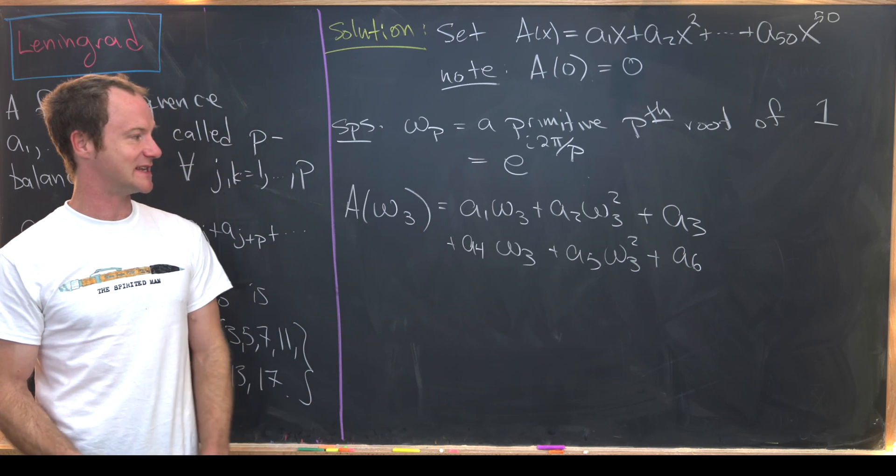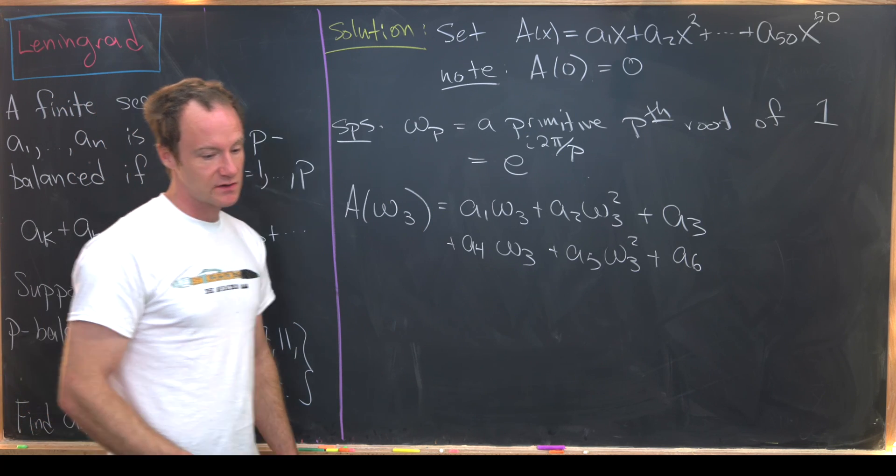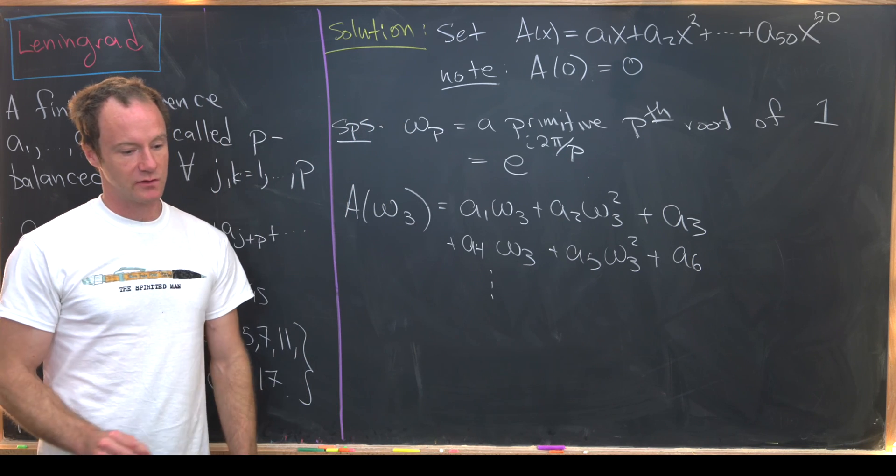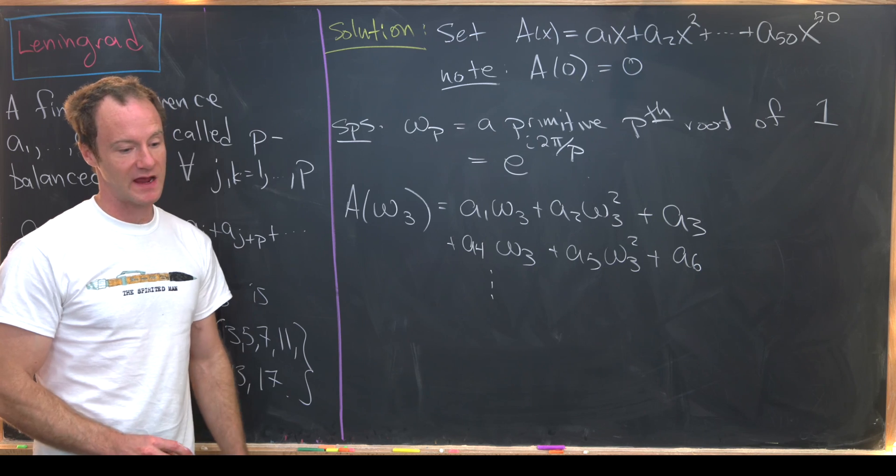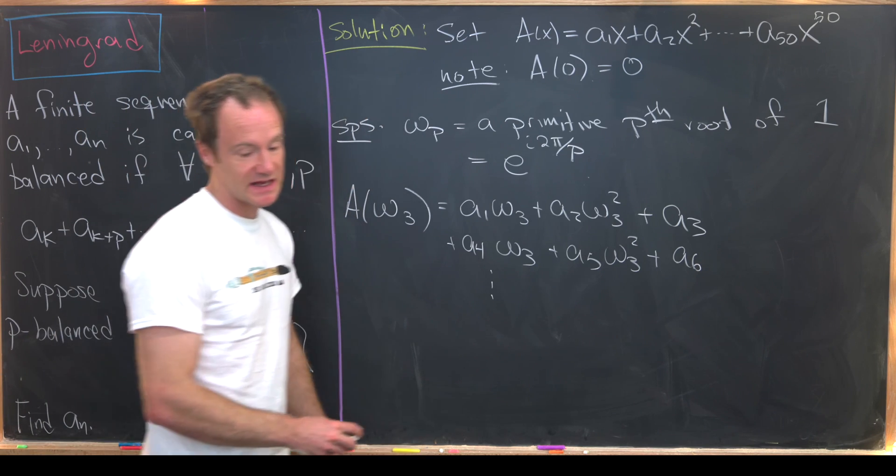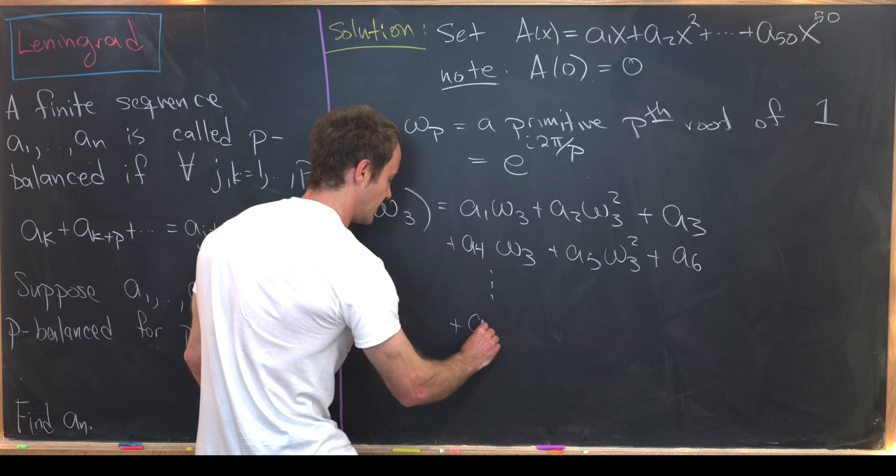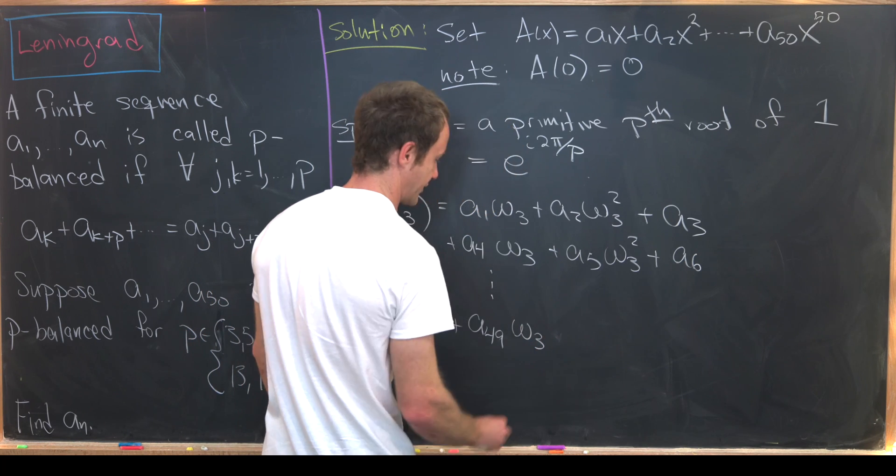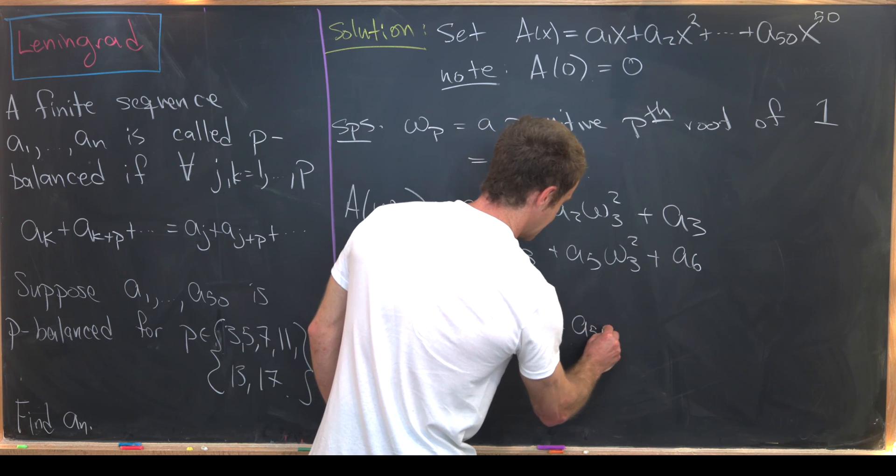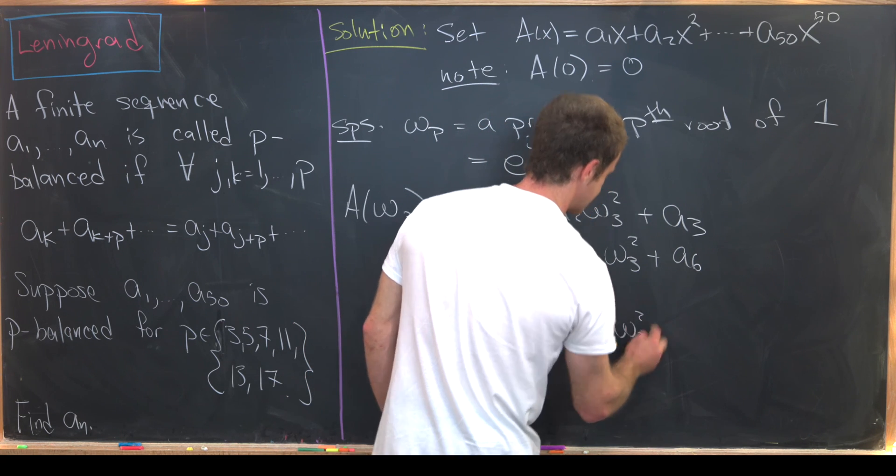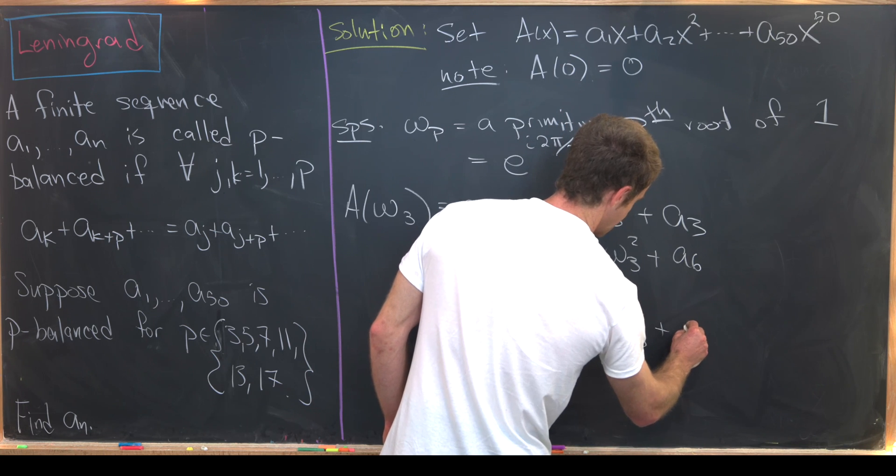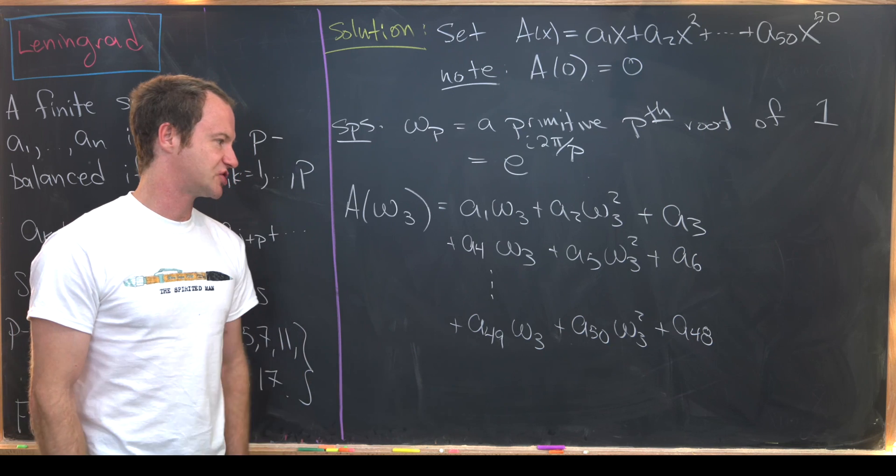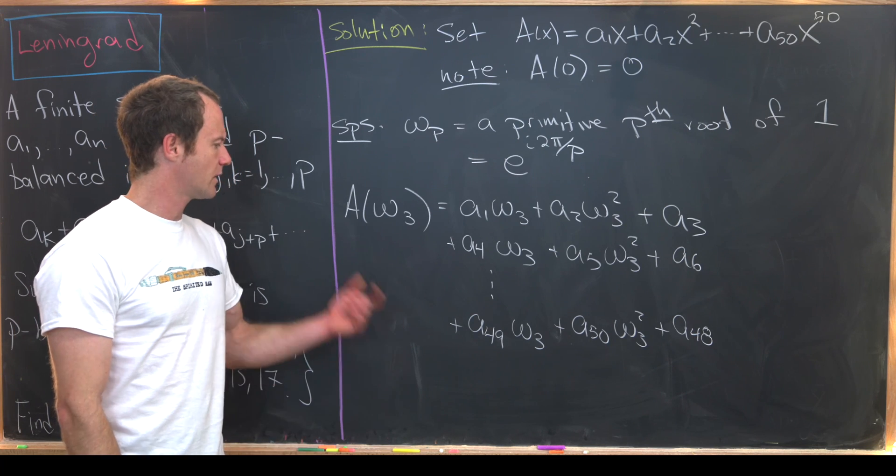And then that's going to continue all the way down. So this line right here which is everything with a coefficient of omega_3 is going to end at 49. So this is plus a sub 49 times omega_3. And then this one is going to end at a sub 50 times omega_3 squared plus a sub 48 times omega_3 cubed. But that's just the number one.